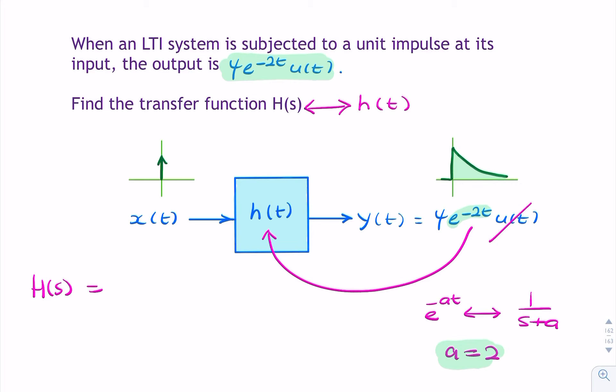Because we've got the minus 2, we need to include the 4 there. So it's 4 times 1 over s plus 2.